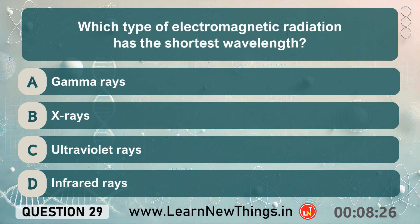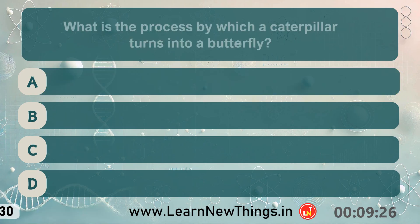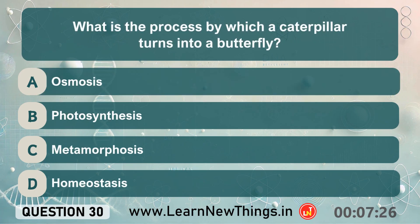Which type of electromagnetic radiation has the shortest wavelength? Gamma rays. What is the process by which a caterpillar turns into a butterfly? Metamorphosis.